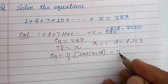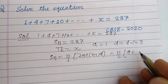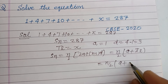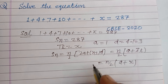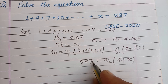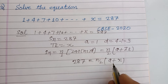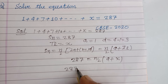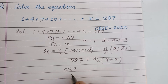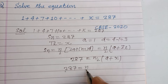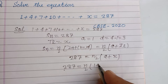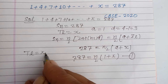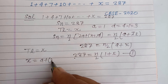Since the last term is x, SN equals n over 2 times (2a plus n minus 1 into d), which also equals n over 2 times (a plus last term), that is n over 2 times (1 plus x). This is given to us as 287. So 287 equals n over 2 times (1 plus x).